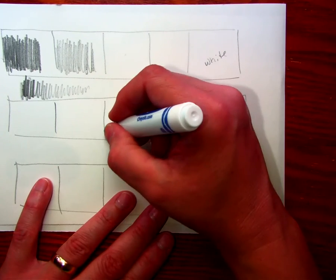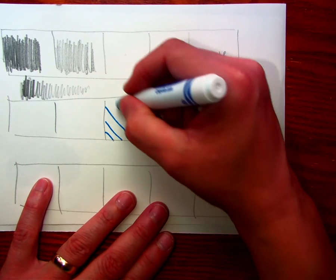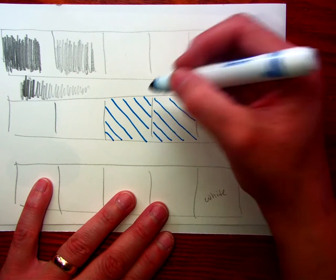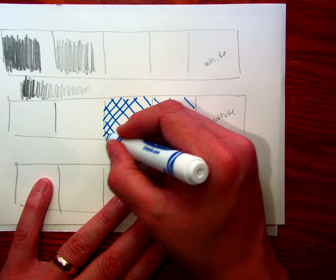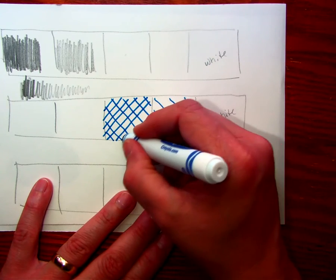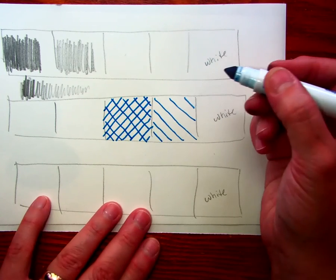These are hatching lines. So as I add more value, they'll get closer together, and I would crisscross them. That's how we get cross-hatching, because we're crossing the hatching lines.